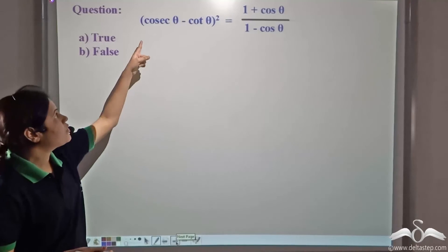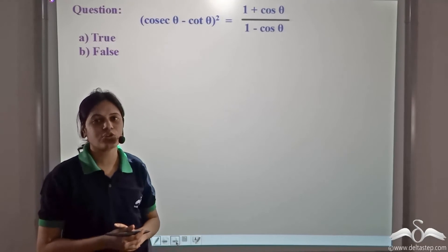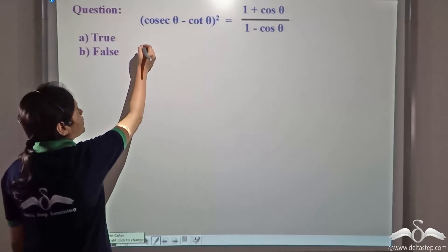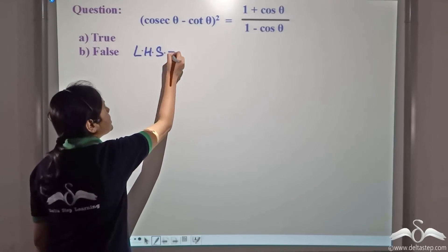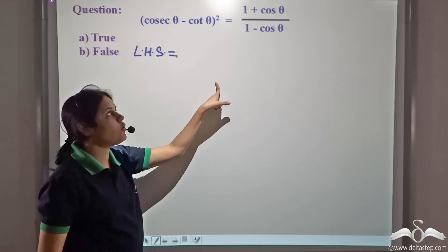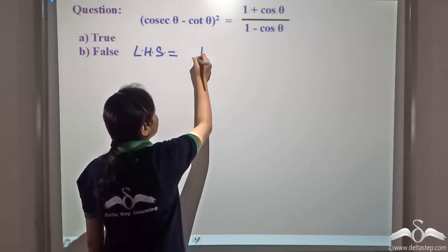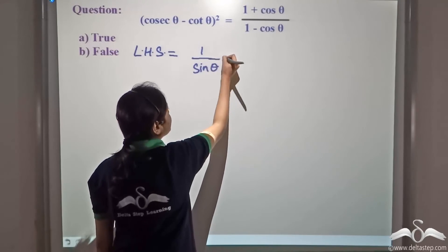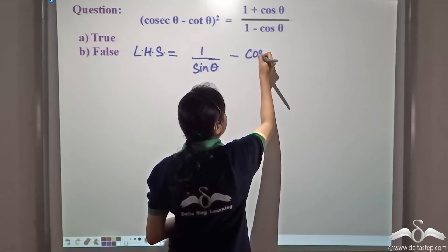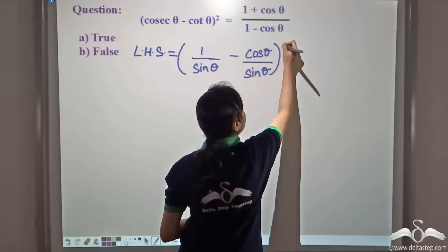Now, can you answer this question? (cosecθ − cotθ)² = (1 + cosθ) / (1 − cosθ). Is it true or false? Let us consider the left hand side. LHS = (cosecθ − cotθ)². Let's convert everything in terms of sin and cos. We know cosecθ = 1/sinθ and cotθ = cosθ/sinθ.